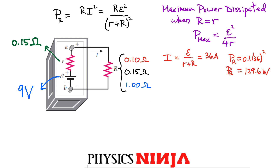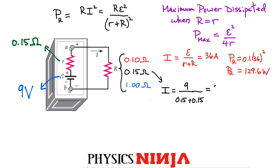For the impedance-matched case, R = 0.15 Ω: the current is 9 / (0.15 + 0.15) = 30 A. The current is a little less because total resistance is higher, but the power dissipated by the 0.15-ohm load is 135 W — the maximum.